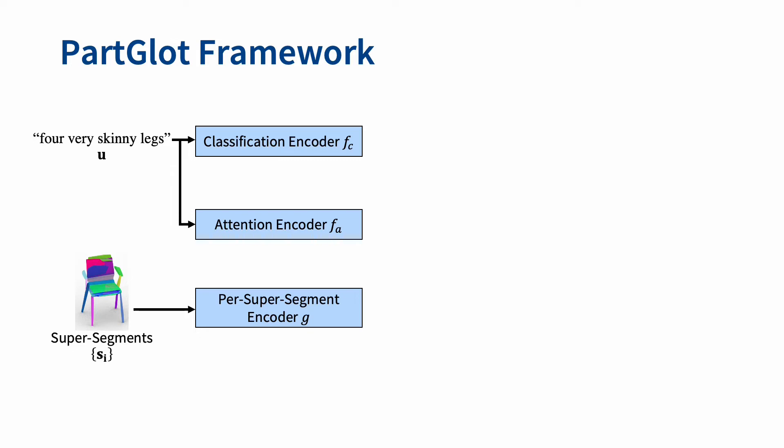First, there are three encoders that take an utterance and super segments of a shape as input. We use LSTM and a variant of PointNet as the utterance and super segment encoders.